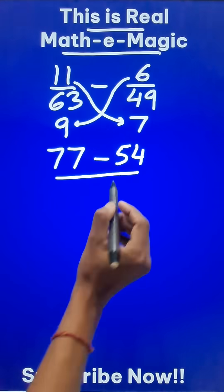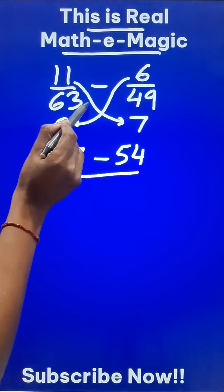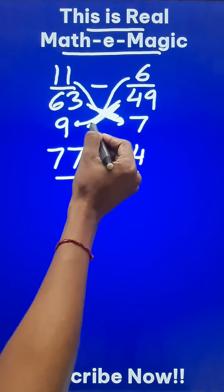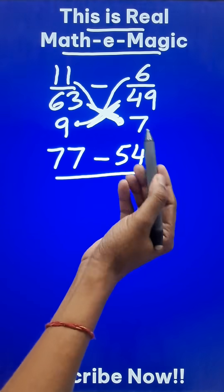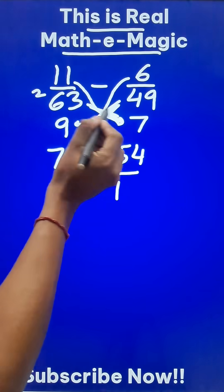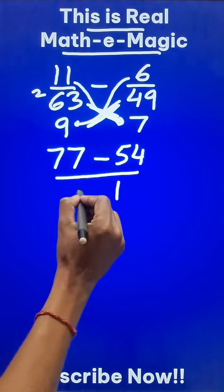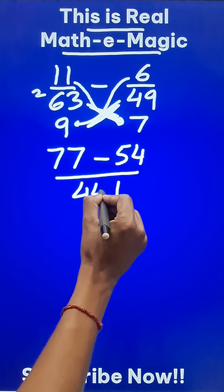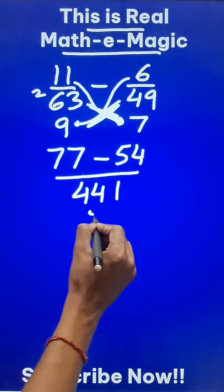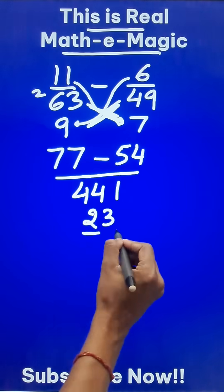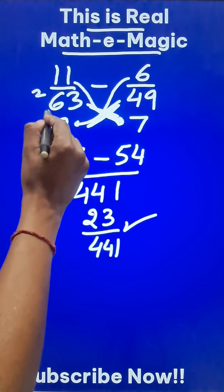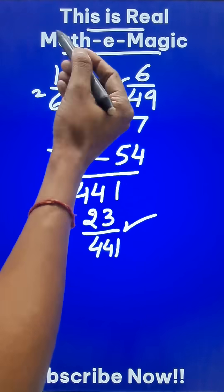In the denominator, either multiply 63 by 7 or 49 by 9 — whichever suits you best. 7 times 63 gives us 441. The difference between 77 and 54 is 23. So 23 upon 441 is the correct answer for this subtraction problem.